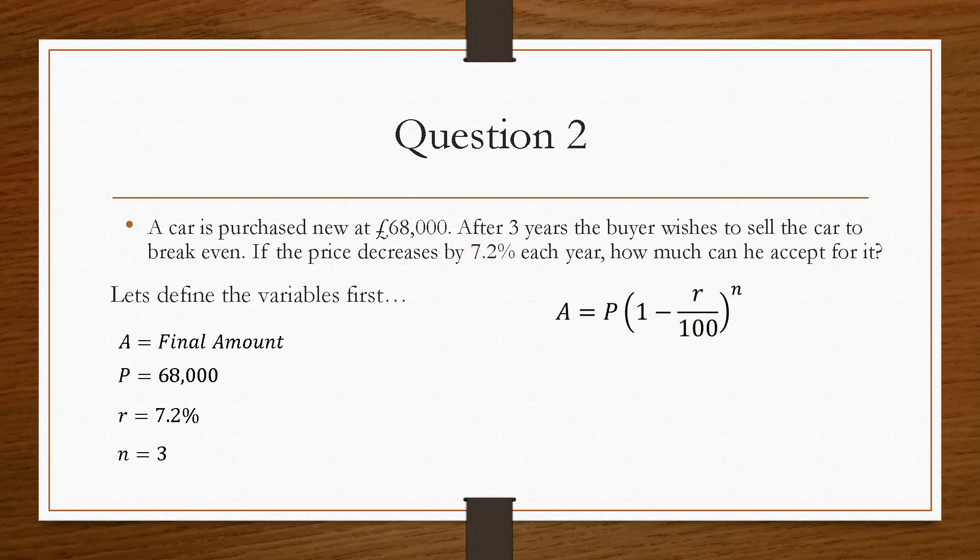We'll define the variables again. A is the thing that we want to find. P is the principal, so that's the £68,000. The percentage, it doesn't matter whether it's decreasing or increasing, will just stay as a positive value. So that will go in as 7.2 divided by 100. And it's going to be after 3 years, so N is 3.